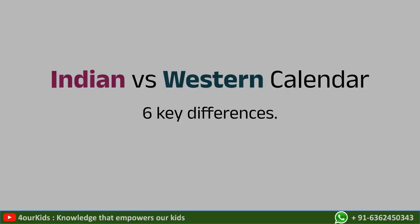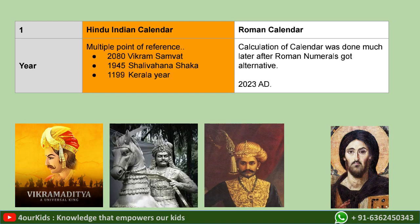There are six key differences between the Indian and Western calendars. In the Indian calendar we have multiple points of reference — the year from Vikramaditya's time, the year from the Shalivahana king's time called Shalivahana Shakha, or the year from the Kerala king, which is 1199. In the Roman calendar, we have a single point of reference based on Jesus Christ.